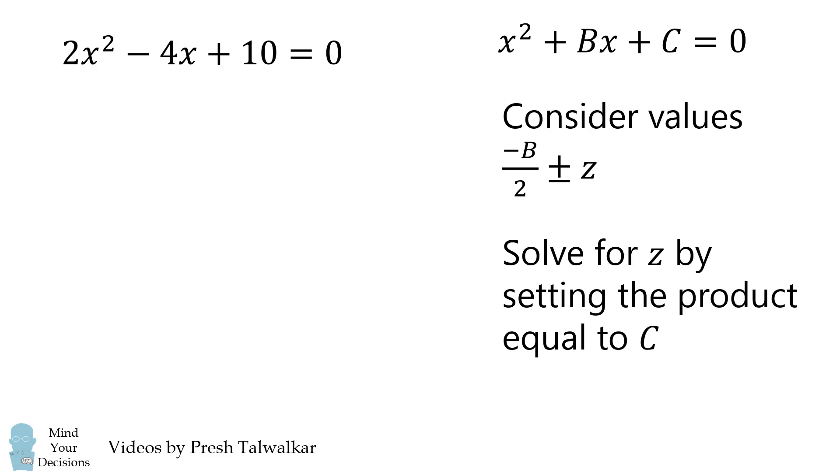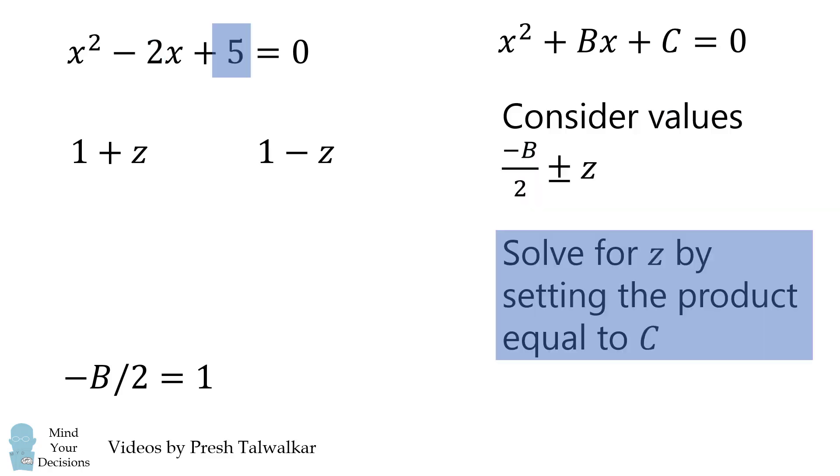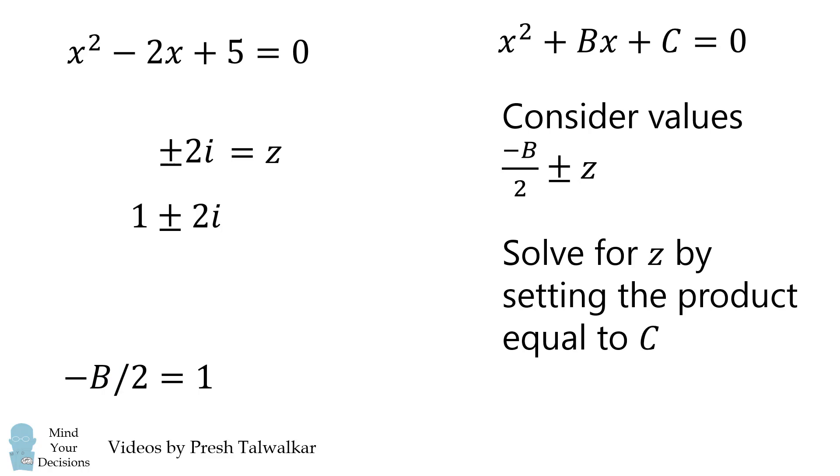Let's do a final example. 2x squared minus 4x plus 10 is equal to 0. The first thing to notice is the coefficient on x squared is equal to 2. We'll divide the entire equation by 2 to make sure it's equal to 1. We have x squared minus 2x plus 5 is equal to 0. Now we'll solve as before. Negative B over 2 is equal to 1, so we have 1 plus Z and 1 minus Z. We want to multiply these together to get a product of 5. We'll do some simplification, and we'll solve that Z is equal to plus or minus 2i. Therefore, we have the values of 1 plus or minus 2i. These have the proper sum and the proper product, and therefore they are roots to the original equation.